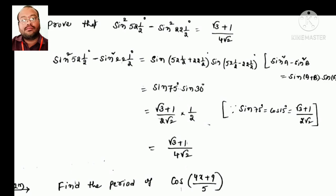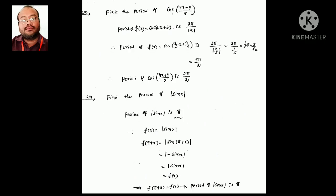Next: find sin²(52.5°) − sin²(22.5°). Using sin²a − sin²b = sin(a+b)·sin(a−b), we get sin75°·sin30°. sin75° = cos15° = (√3+1)/(2√2), and sin30° = 1/2. So the answer is (√3+1)/(4√2).